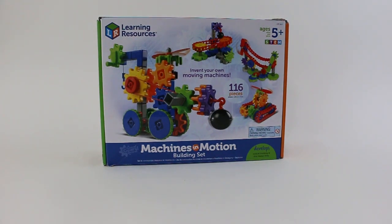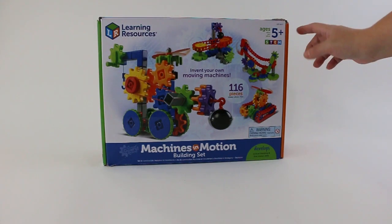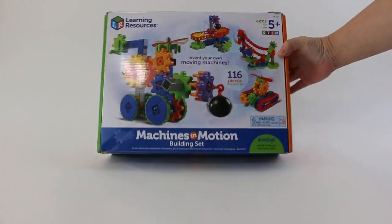Here we have the Learning Resources Machines in Motion. It's part of the gears system where you can buy different sets or just the gears themselves. This is the building set called Machines in Motion. It's for five years and up. It has 116 pieces in it.